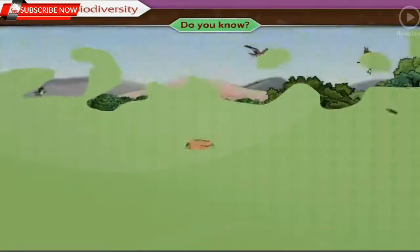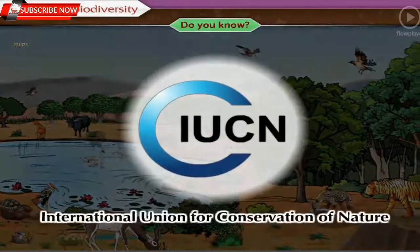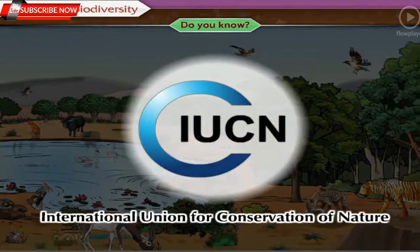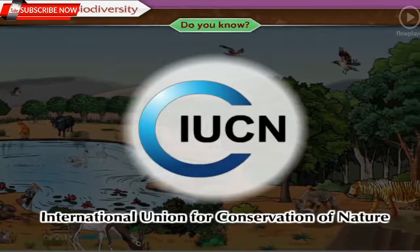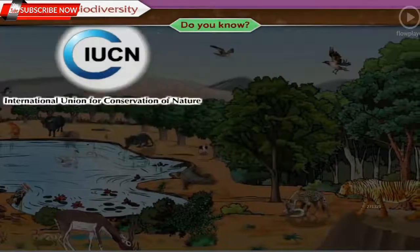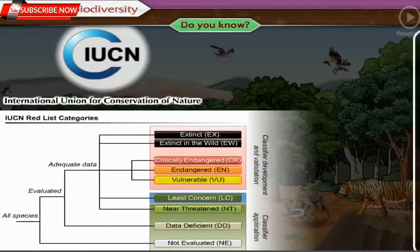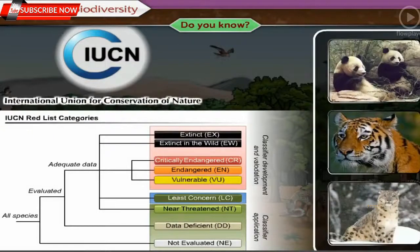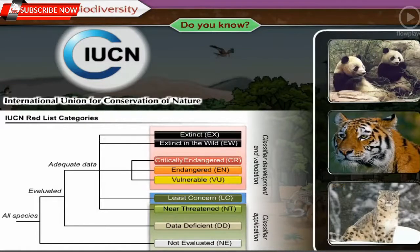The International Union for Conservation of Nature (IUCN) has prepared a Red List of endangered species from all around the world. The pink papers in this list include endangered species, and the green papers include the list of earlier endangered species which are now out of danger.